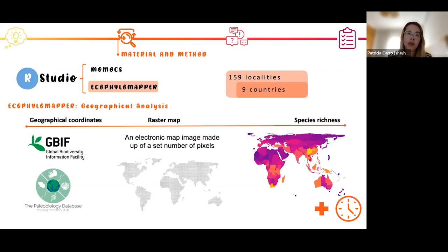And then we built a raster map. This is a map made up of a set number of pixels. And then we are going to study the species richness per fossil sites.